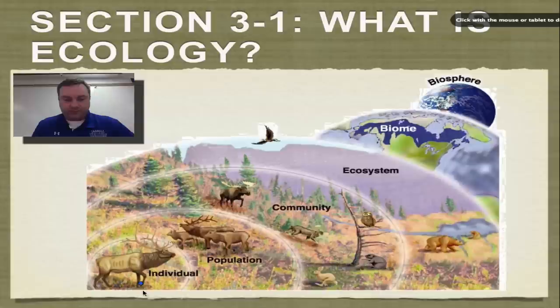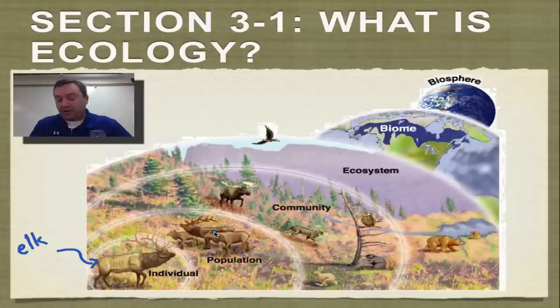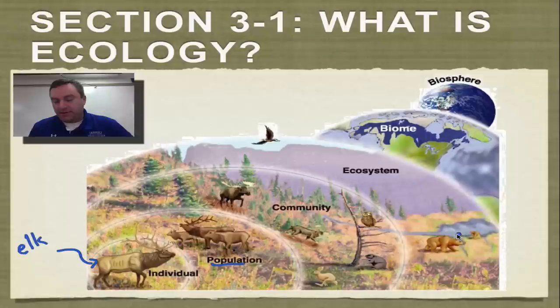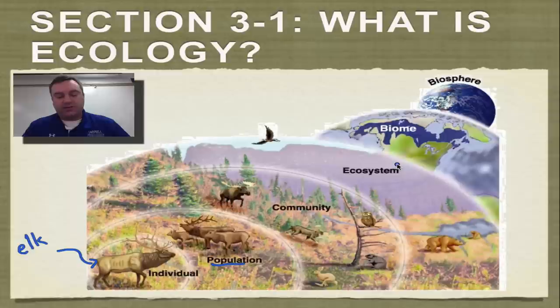Here's a graphic that explains what we just went over. Here's your individual — in this case, an elk — representing one member of the elk species. A bunch of elk in the same place that can breed and produce fertile offspring is your population. Add elk with moose, trees, a bobcat, an owl, and a rabbit — those are all different populations, and that's the community. Add in all the living things plus the non-living things like the air, the mountains, and a pond, and that's your ecosystem. This would be a taiga or coniferous forest — a biome found up in northern Canada. And obviously the biosphere is the entire planet — all these levels just get bigger and bigger.